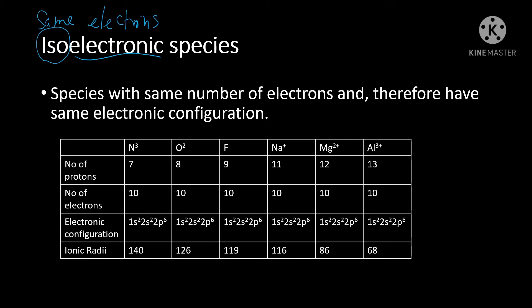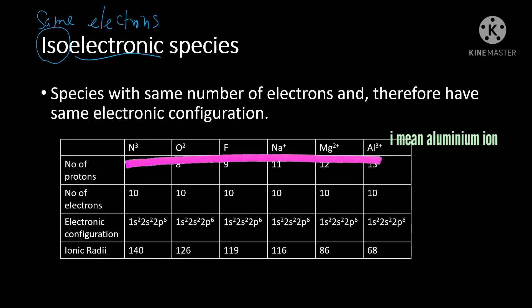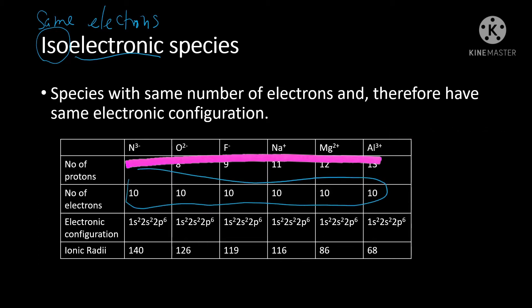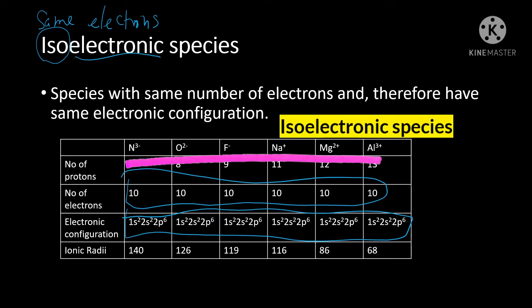For example, in this table, nitrite ion, oxide ion, fluoride ion, sodium ion, magnesium ion, and aluminum ion — all of these species have 10 electrons and the same electronic configuration. Therefore, we say that these species are isoelectronic species because they have the same number of electrons and the same electronic configuration.